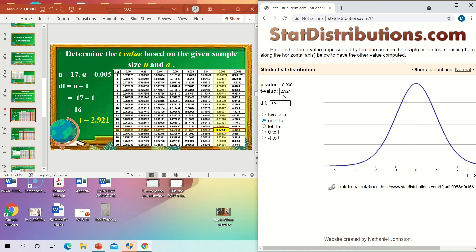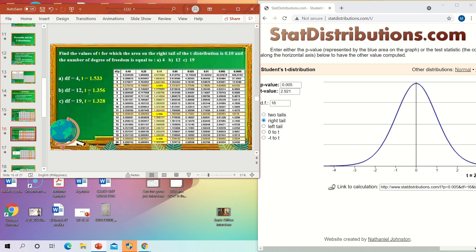So, in our first example, we had an area, right? Area was given first. We had an area of 0.005 and we had a DF of 16. There. Degree of freedom of 16. So, the T value that came out is 2.921. So, our answer earlier was correct.